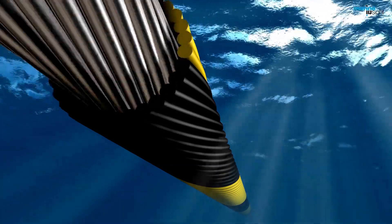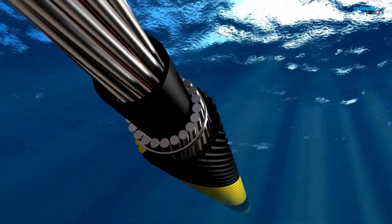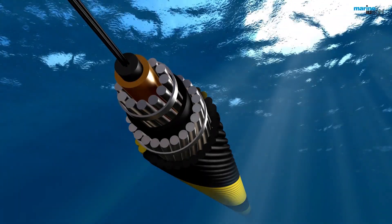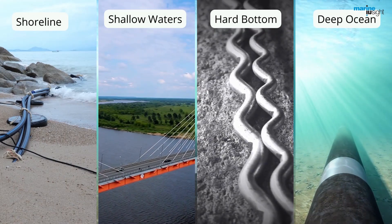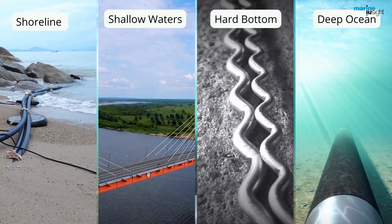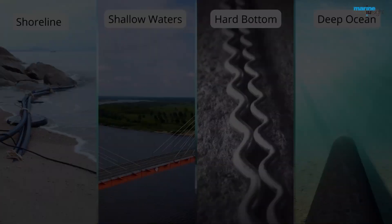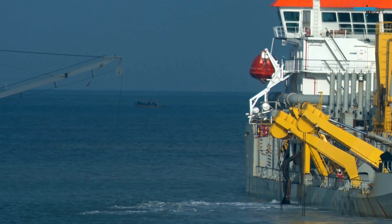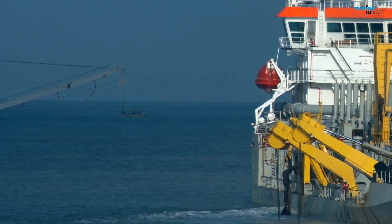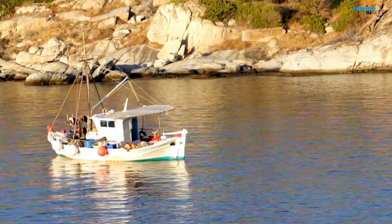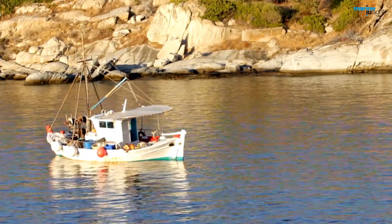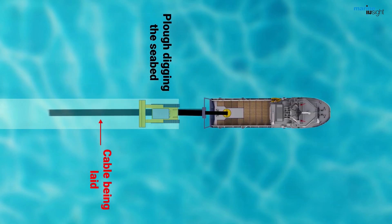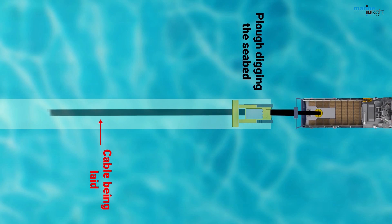Cable ships must take necessary measures to ensure that the wires and amplifiers are not damaged and can work for many decades. Some laying techniques include shoreline, shallow waters, hard bottom areas, and deep ocean. Undersea cable installation is environmentally a low-impact commercial process given its maintenance, operation and repair. The previously used small diameter fibre optic cables were damaged by fishing boats, so modern-day underwater cables are buried in the ocean floor using special undersea plows.